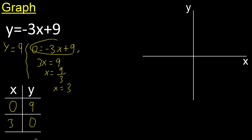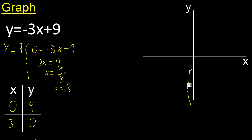Find x. Y is 9. Positive. Y negative. Positive. 9 is here. x is 0. x 0 is here. 0, 9. Therefore, point is here.